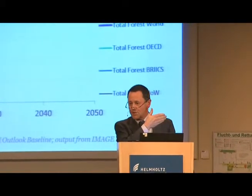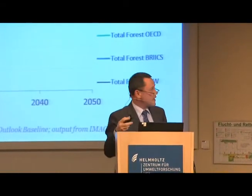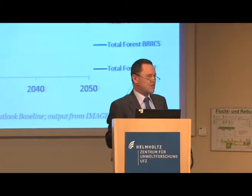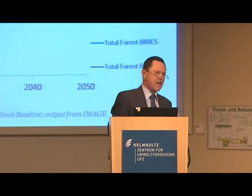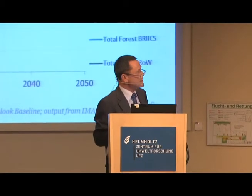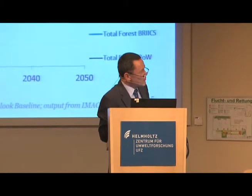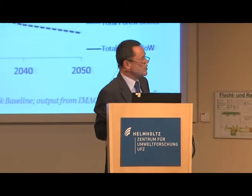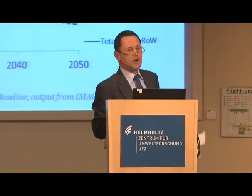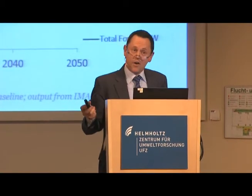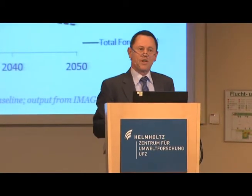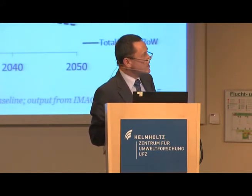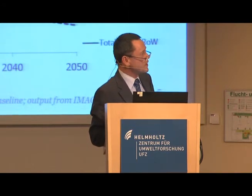Forestry is one of the major pressures. Let's take a look at the primary forest - this is not all pristine, but it is largely unmodified. That's the global total, then broken out for the three groups: OECD, BRICS, and rest of world. You can see declining primary forest through the period, but total forestry, when you start to add in production forest, shows strong increases, particularly in the BRICS but also in the OECD.